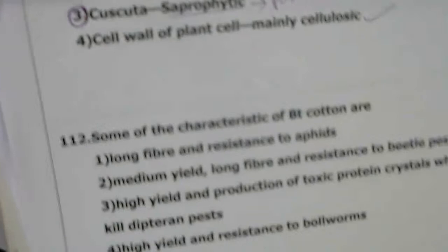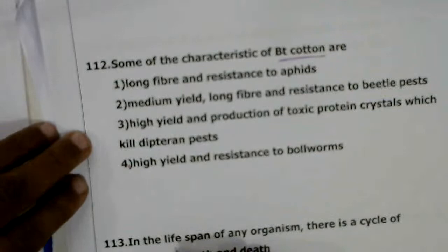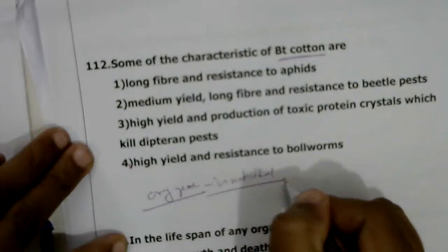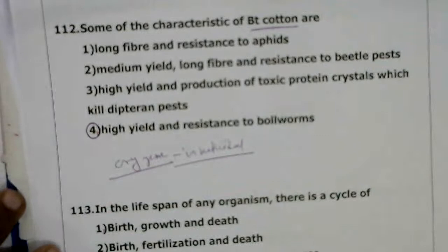Next question: some characteristics of Bt cotton — long fiber and resistant to aphids. Bt cotton is a transgenic plant containing the CRY gene (insecticidal gene). One important characteristic of Bt cotton is high yield and resistance to bollworms. The correct answer is the fourth option.